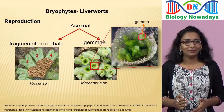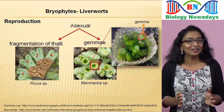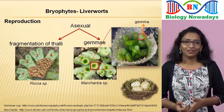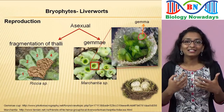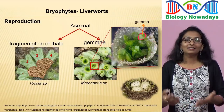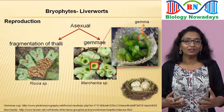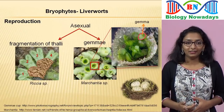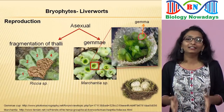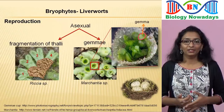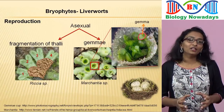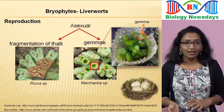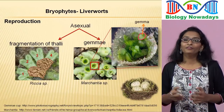Whenever I see a gemmae cup, the first thing that comes to my mind is a bird's nest with some eggs in it. Just as an egg hatches into a bird, in the same way each gemma germinates into a new thallus. Also remember that the gemmae will first get detached from the parent body before germinating. Usually the gemmae present on the male thallus produce male plants and those on the female thallus form female plants.